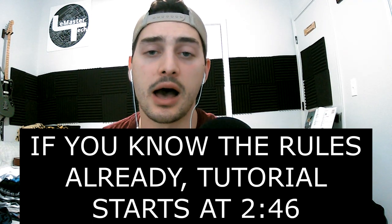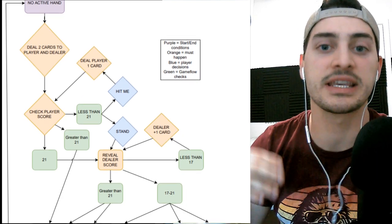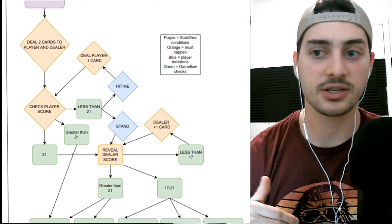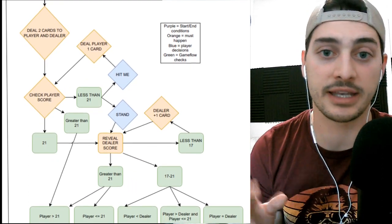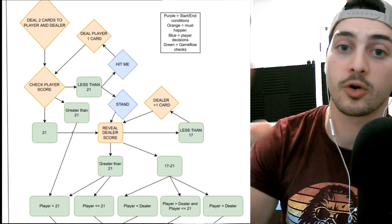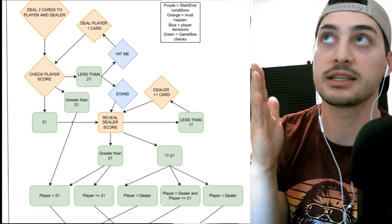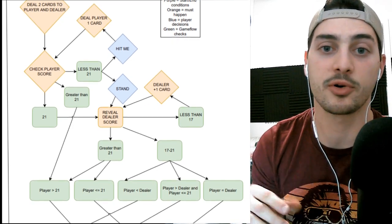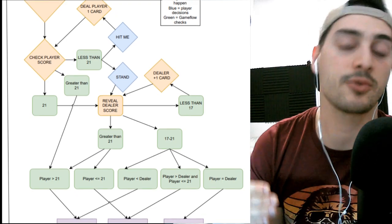We're going to go line by line through how to make this entire game. If you're not familiar with Blackjack — some places just call it 21 — I'll quickly go over the rules. When there's no active hand, the round starts by every player and the dealer getting dealt two cards. Players can see their cards, and the dealer turns one of their two cards face up. The player checks their score and decides what to do. If at any point you get 21, that's Blackjack — an immediate win unless the dealer also gets 21. You want to get as close to 21 as you can without going over, or busting. Cards 2 through 9 are just the value they represent.